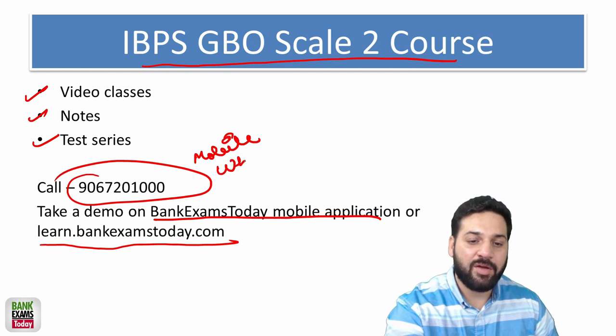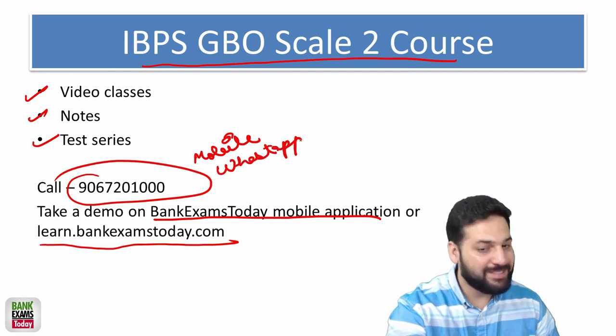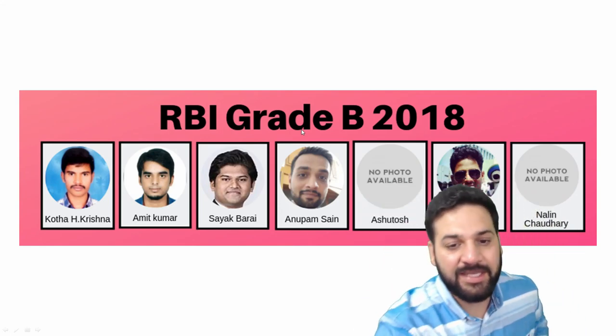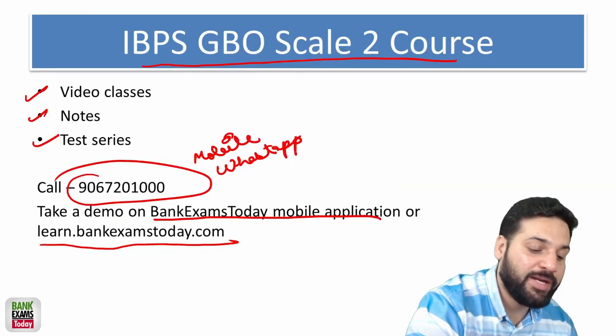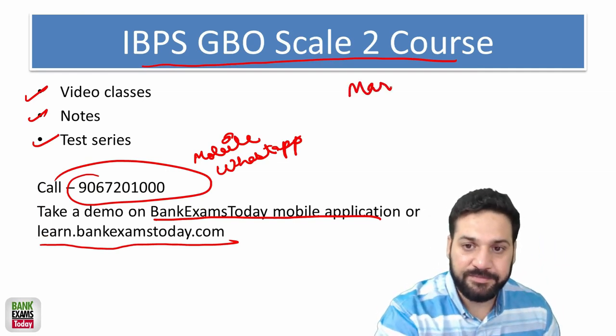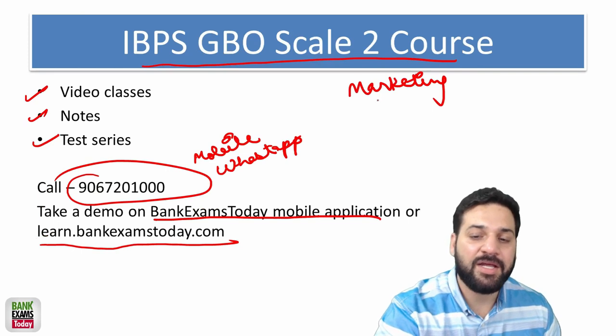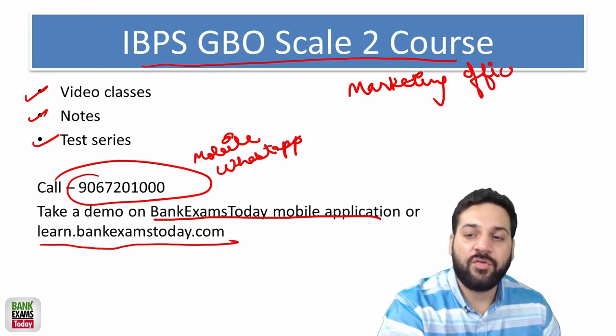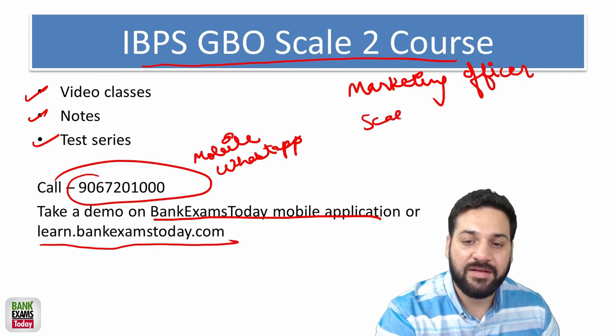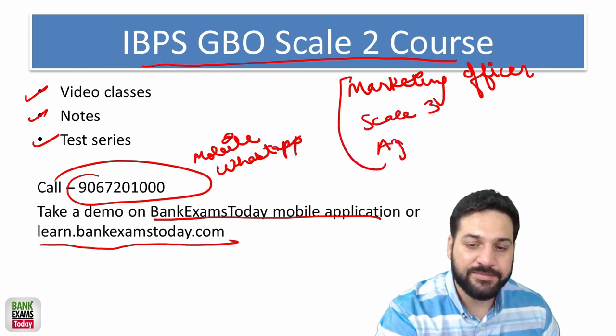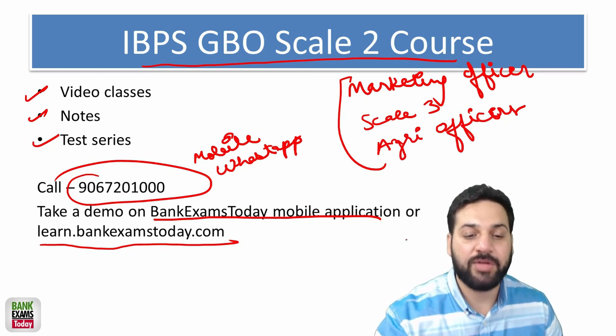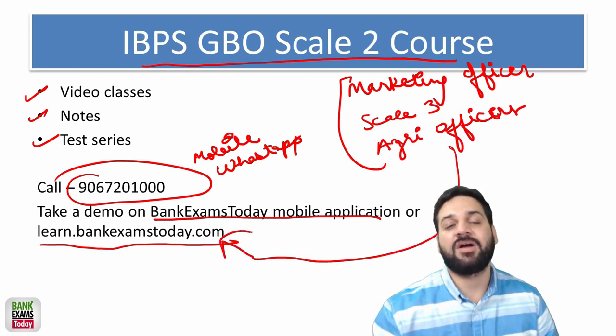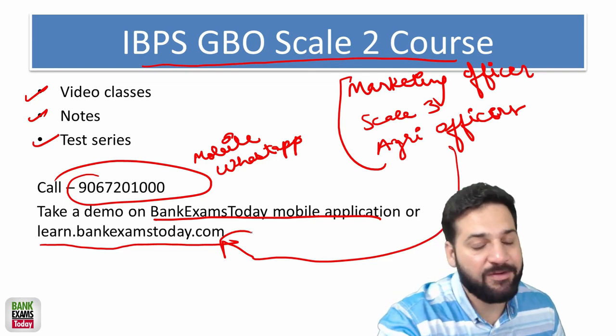And you can also WhatsApp us on the same number. This is a list of students who recently cracked the RBI Grade B, IBPS SO Marketing, maybe Grade A, NABARD Grade A, Bank of India credit officer. And students, we are also providing a proper course on marketing officer for IBPS RRB marketing officer Scale 2. We are also providing a course for Scale 3 and also for the agriculture officer. All these courses are available on BankExamsToday mobile app and you can also get the course on learn.bankexamstoday.com. In case of any doubt you can call us back. So thank you and have a very nice day. Bye.